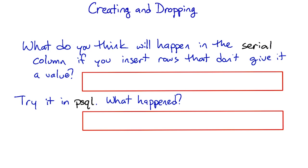What do you think will happen in the serial column when you insert a row that doesn't give it a value? Try it in PSQL. What was it that actually happened? Then after that, try finding a description of this behavior in the PostgreSQL documentation.